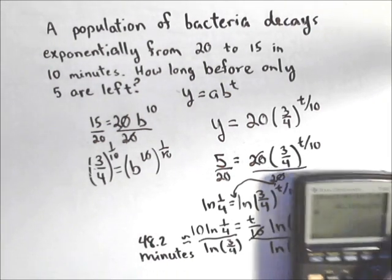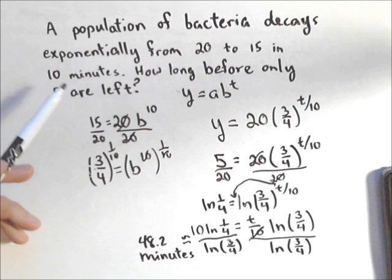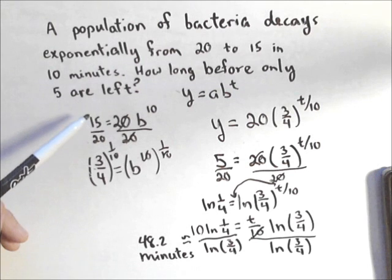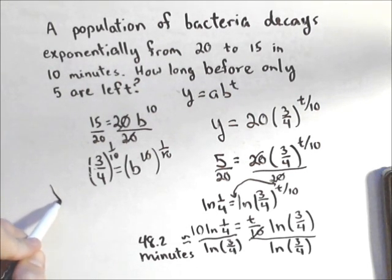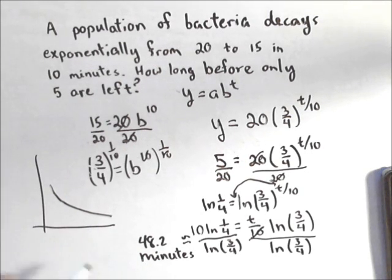Now that may seem kinda weird at first, because we saw we lost five bacteria in only 10 minutes. But remember, this isn't linear. We're not losing five bacteria every 10 minutes. It's exponential. So what happens is it's gonna decay quickly at first, and then slower and slower over time, because it's gonna be concave up.